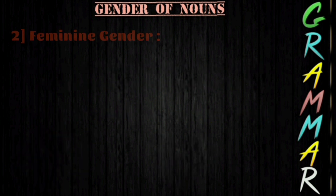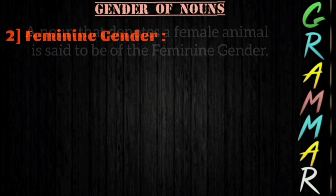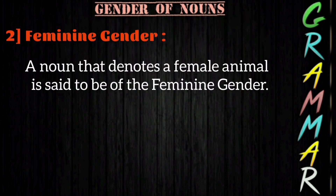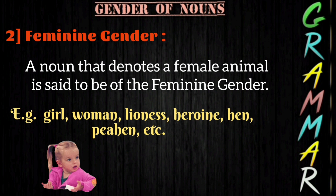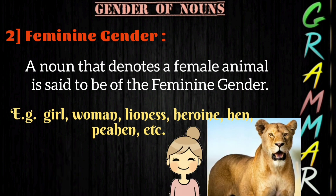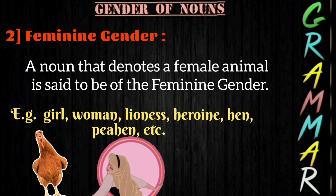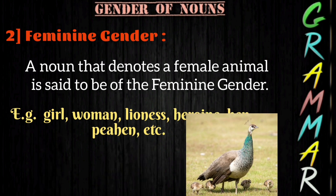The next one is feminine gender. A noun that denotes a female animal is said to be of the feminine gender. For example: girl, woman, lioness, heroine, hen, peahen, etc.